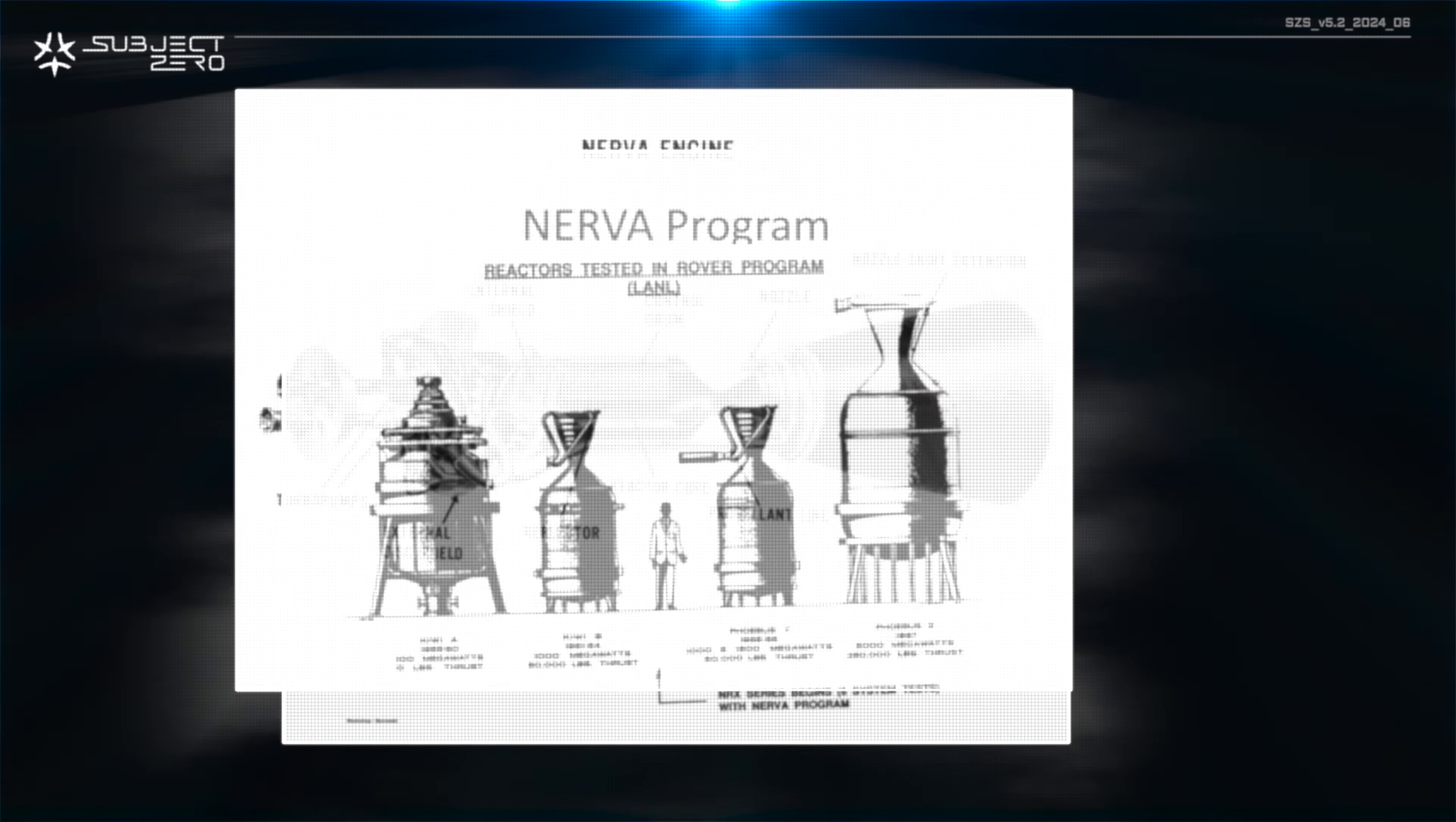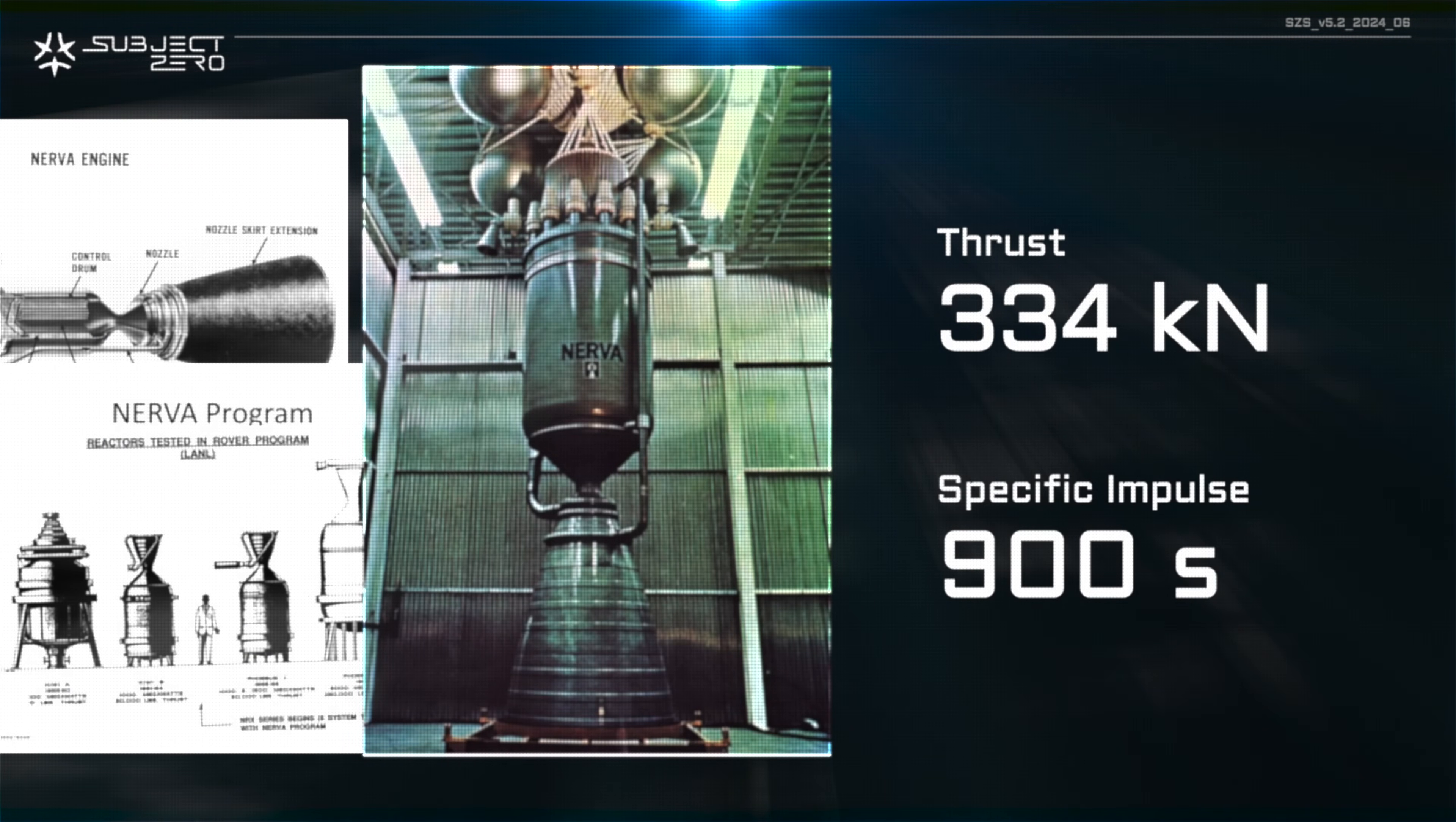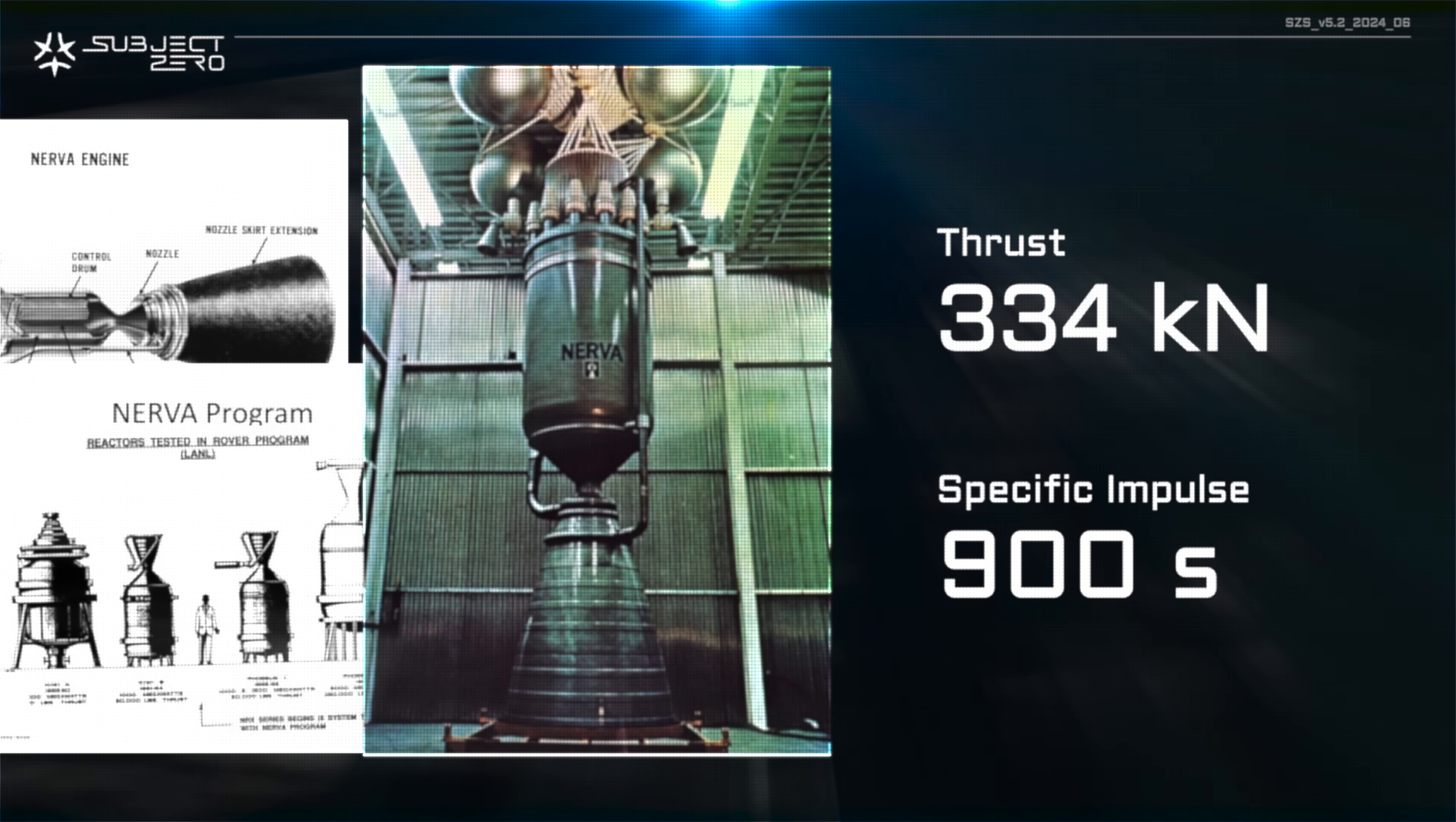As a reference, the Nerva nuclear engine, back in the 1960s and 1970s, achieved impressive 334 kilonewtons of thrust, with specific impulse of 900 seconds.